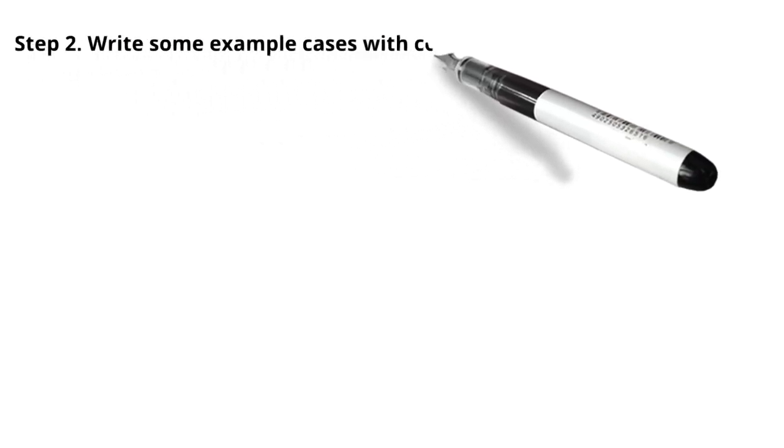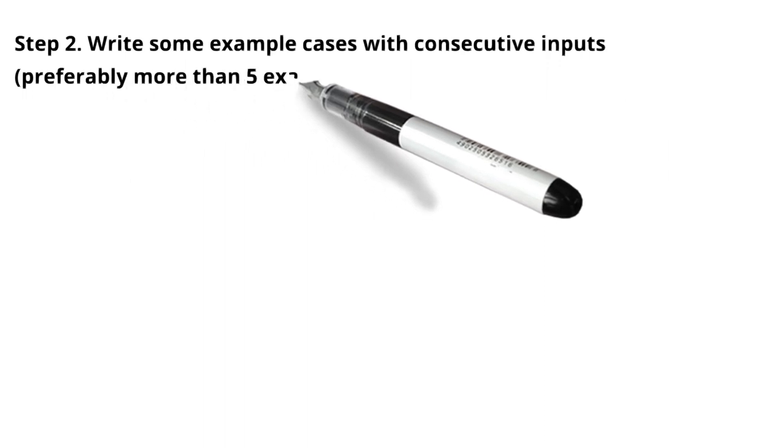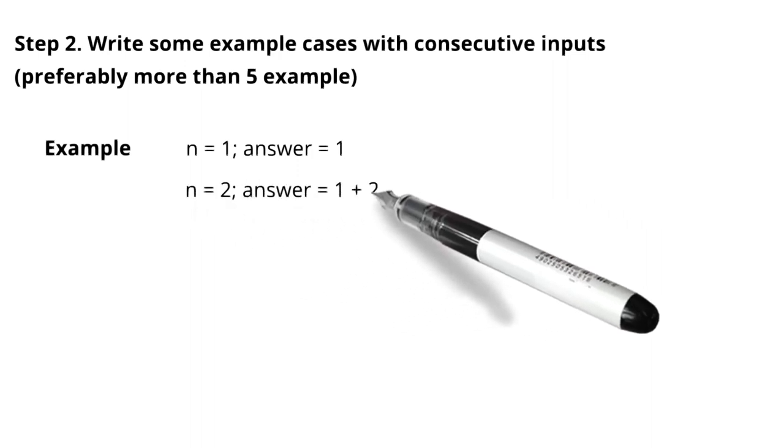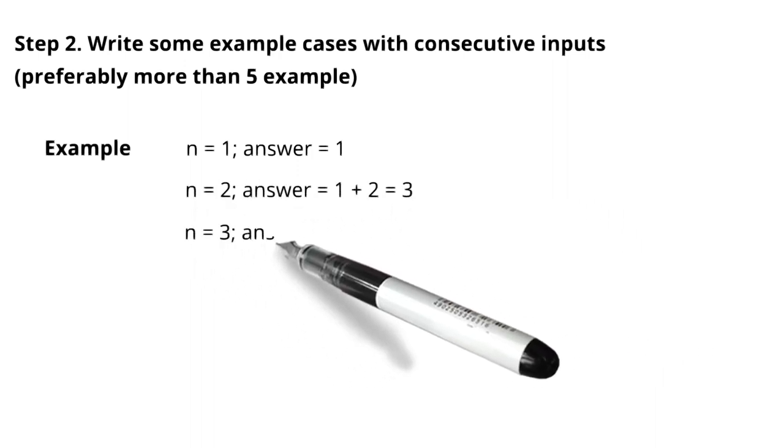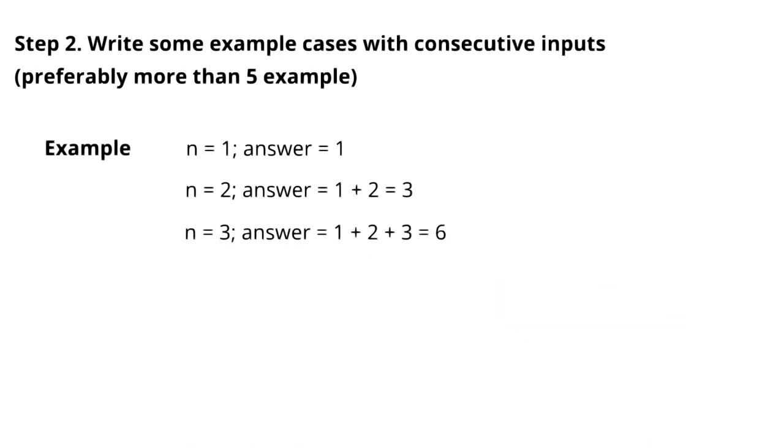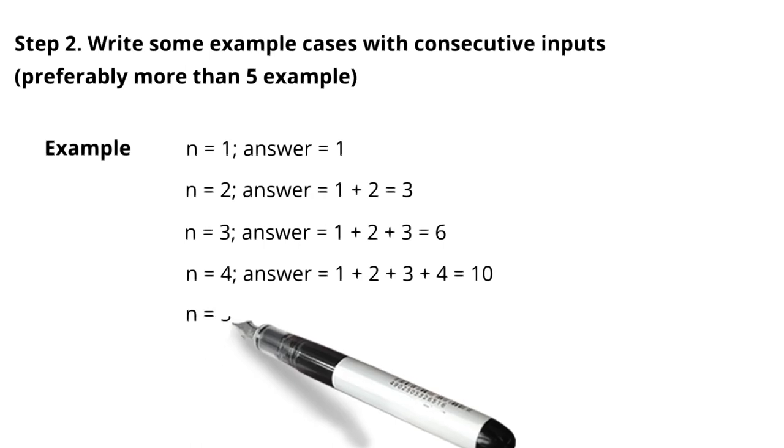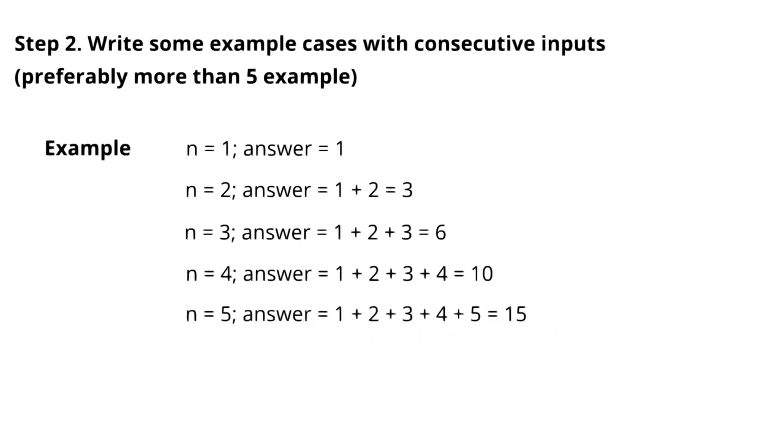Step 2. Write some example cases with consecutive inputs. Preferably more than 5 examples. So we have to find the output for inputs 1, 2, 3, 4 and 5. For n equals to 1, the answer is 1. For n equals to 2, the answer is 1 plus 2, that is 3 and so on. And for n equals to 5, the answer is 15.